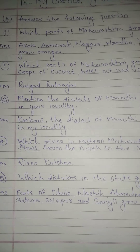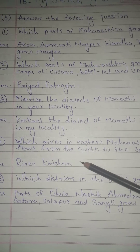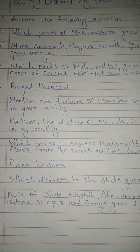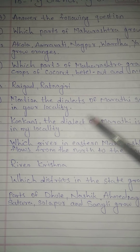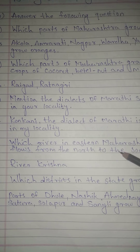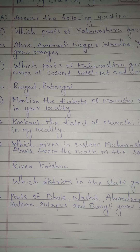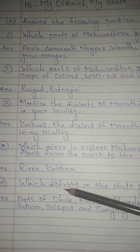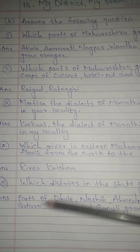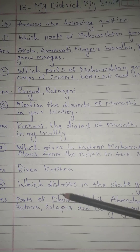Question No. 4: Which river in eastern Maharashtra flows from the north to the south? Answer: River Krishna.